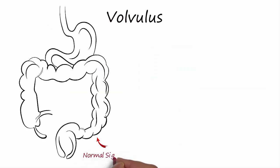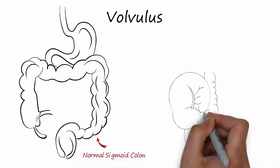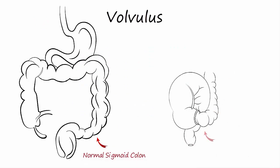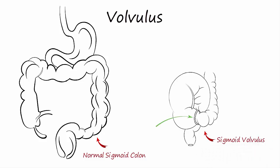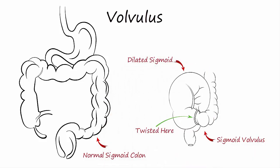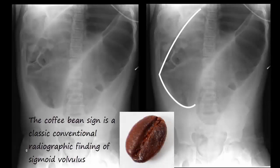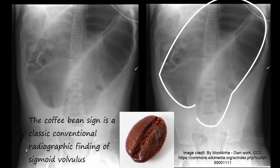Volvulus is defined as a loop of intestine which is twisted around itself creating a knot, resulting in a bowel obstruction.